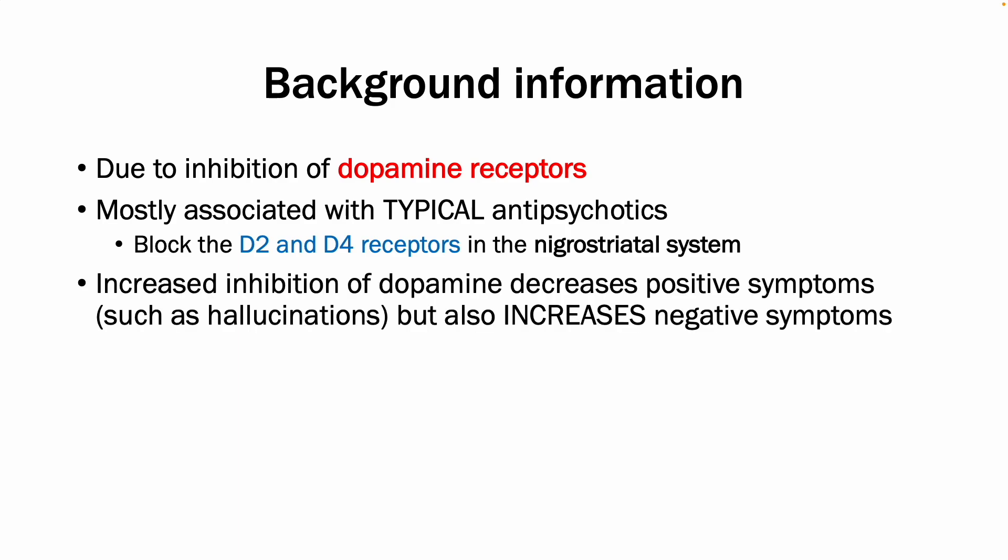The increased inhibition decreases positive symptoms, which is what we want in patients who experience things such as hallucinations, but it increases negative symptoms. There are five main extrapyramidal symptoms: dystonia, parkinsonism, tardive dyskinesia, akathisia, and the most serious one, neuroleptic malignant syndrome.